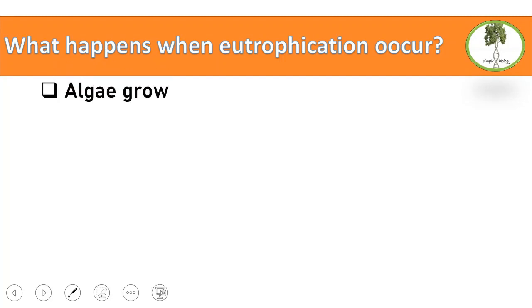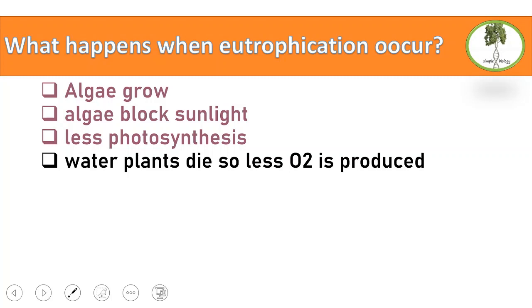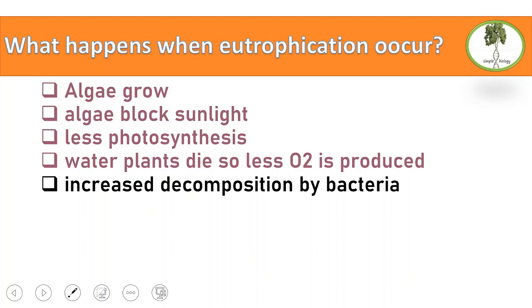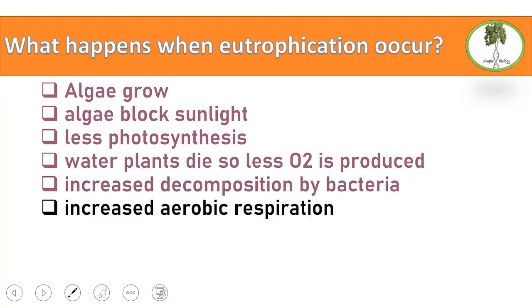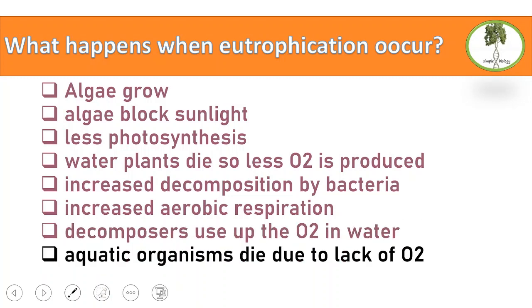The algae grow on the surface and block sunlight, meaning less sunlight reaches water plants, so less photosynthesis occurs and water plants die. This results in less oxygen produced in the water. Algae have a high rate of reproduction and decomposition, so bacteria increase decomposition of dead matter via aerobic respiration, which requires oxygen — reducing oxygen even further. Eventually, there is not enough oxygen for other organisms, so aquatic organisms die due to lack of oxygen.